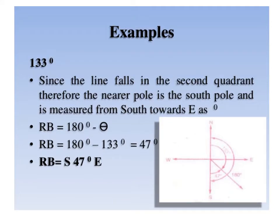For WCB of 133 degrees: since the line falls in the second quadrant, the nearest pole is south and it is measured from south towards east. Therefore, reduced bearing equals 180 degrees minus theta: 180 minus 133 equals 47 degrees. The line lies in the south-east quadrant, so the reduced bearing is S 47 degrees east.